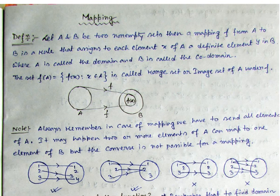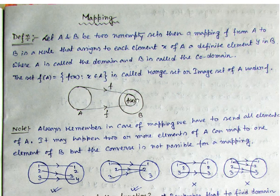To mapping kya hota hai? Samaj lo humare paas do non-empty sets hain — Capital A and Capital B. Mapping is nothing but a rule from A to B that assigns every element of set A to some definite element of B. To mapping mein kya hona chahiye? A set ke sabhi elements ko hum log send karna hai. Koi bhi element A mein agar rah jaata hai jiska hum log mapping nahi kar sakte to woh mapping hi nahi hogi. For well-definedness of a mapping, we have to send all the elements from A, and that will form a subset of B.